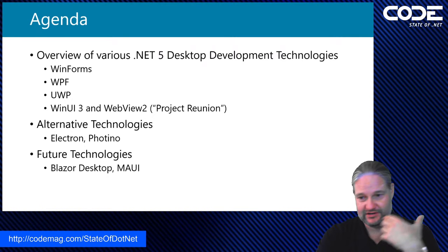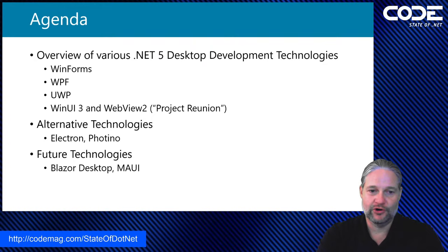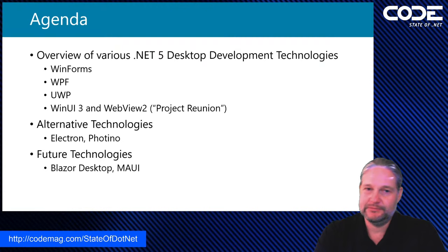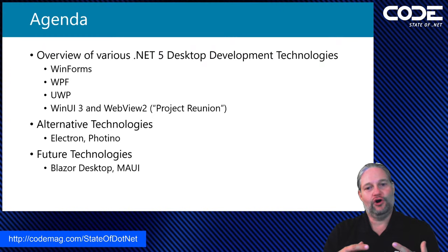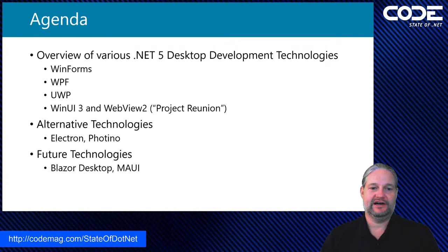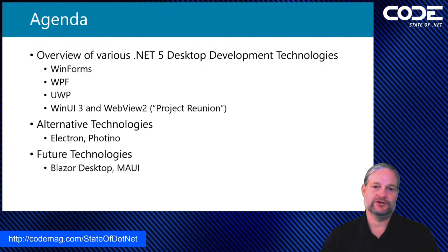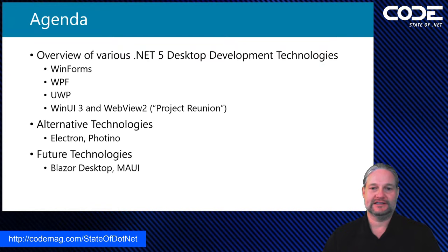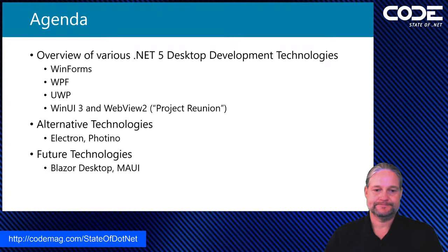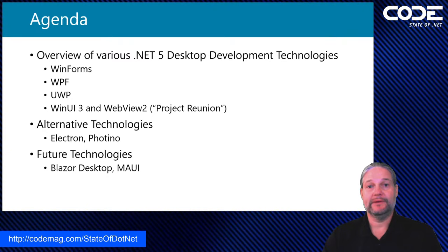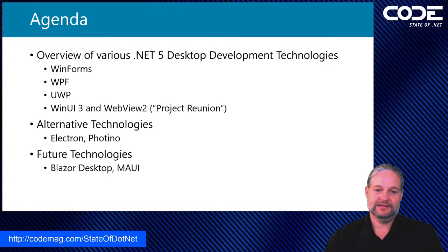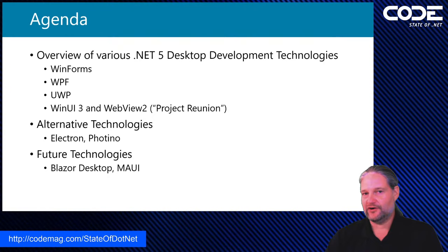That encompasses a lot of things. We'll talk about older technologies brought forward, particularly WinForms. We'll also talk about WPF, the newer generation, though not a spring chicken anymore either. We'll briefly discuss UWP, WinUI, and WebView — all the things that fall under the .NET client-side development umbrella in the .NET 5 timeframe. Then we'll branch into alternative technologies like Electron, and we'll also talk about Fotino, which Jim mentioned in the intro. We'll peek into the future with Blazor desktop development and MAUI, which are .NET 6 timeframe technologies.